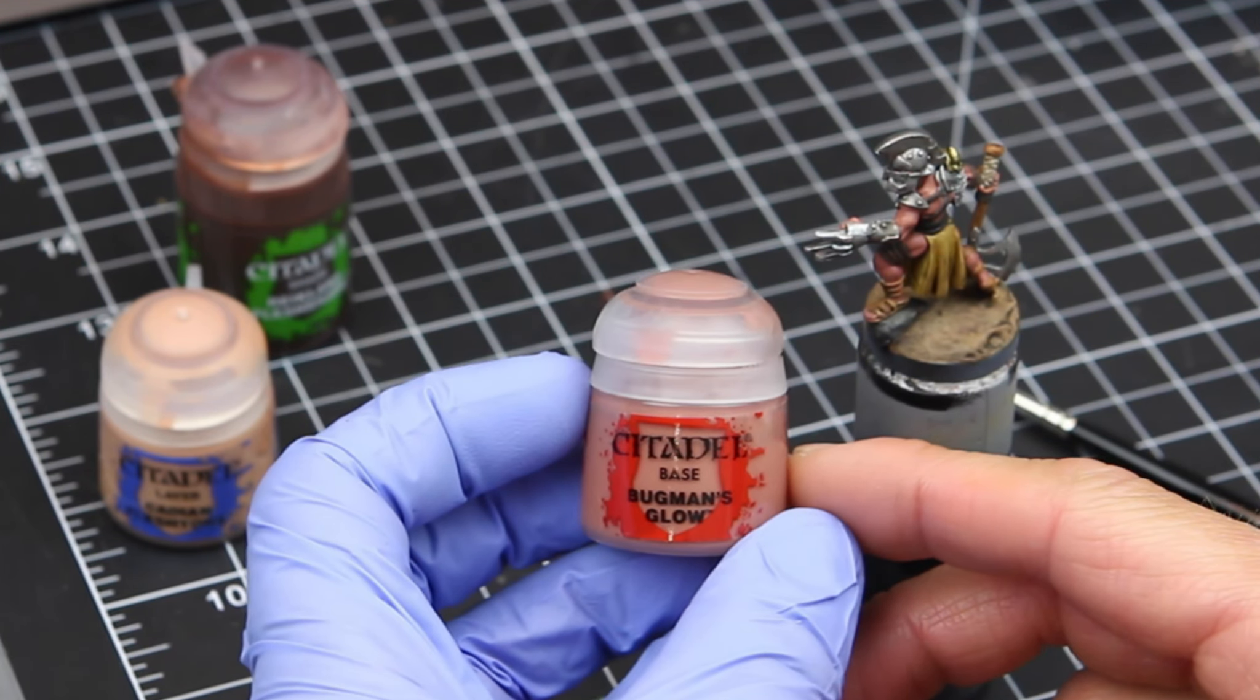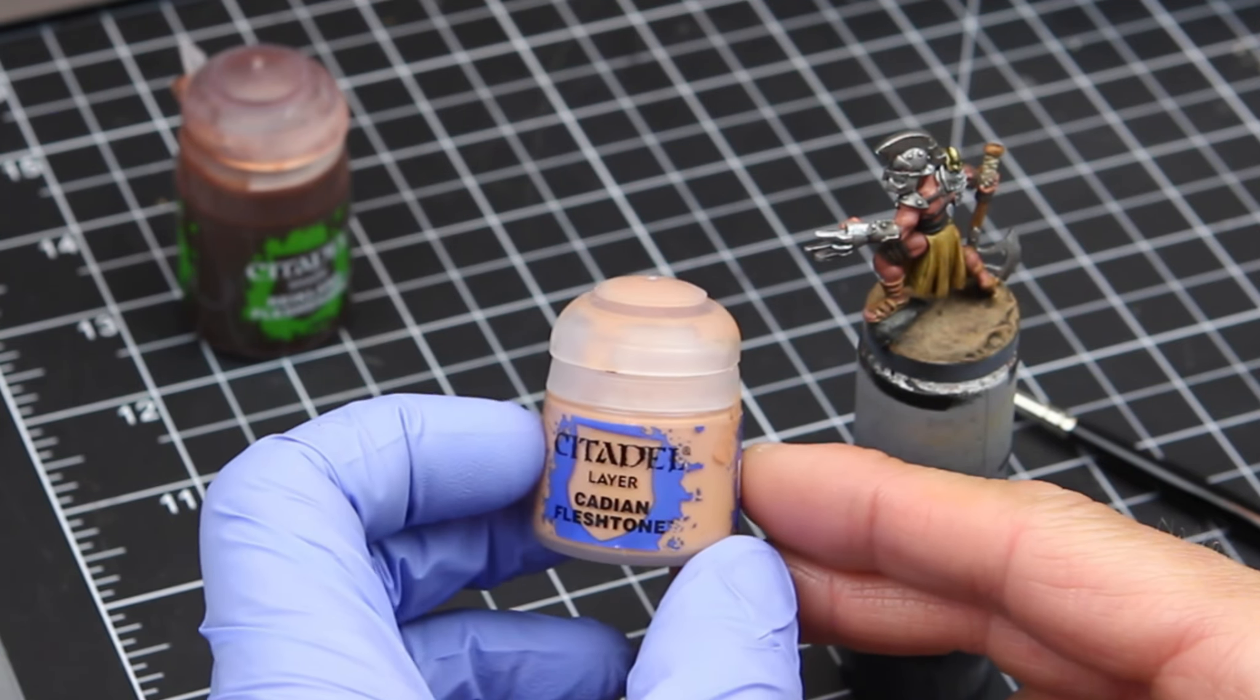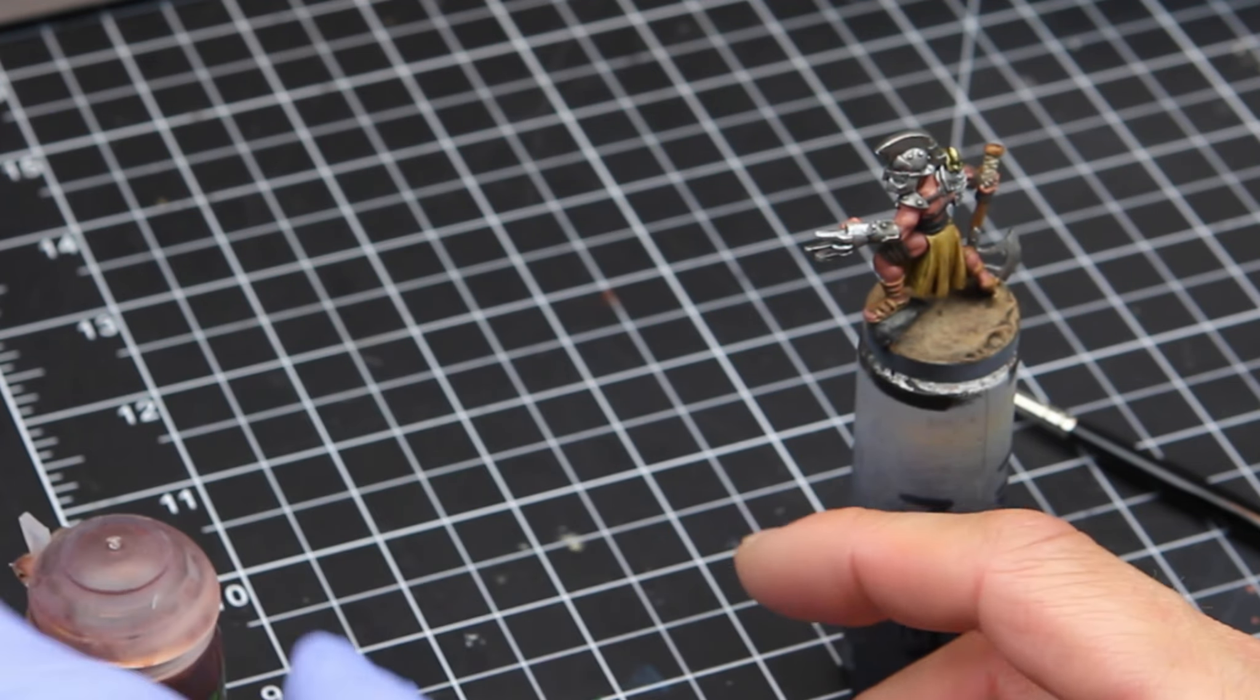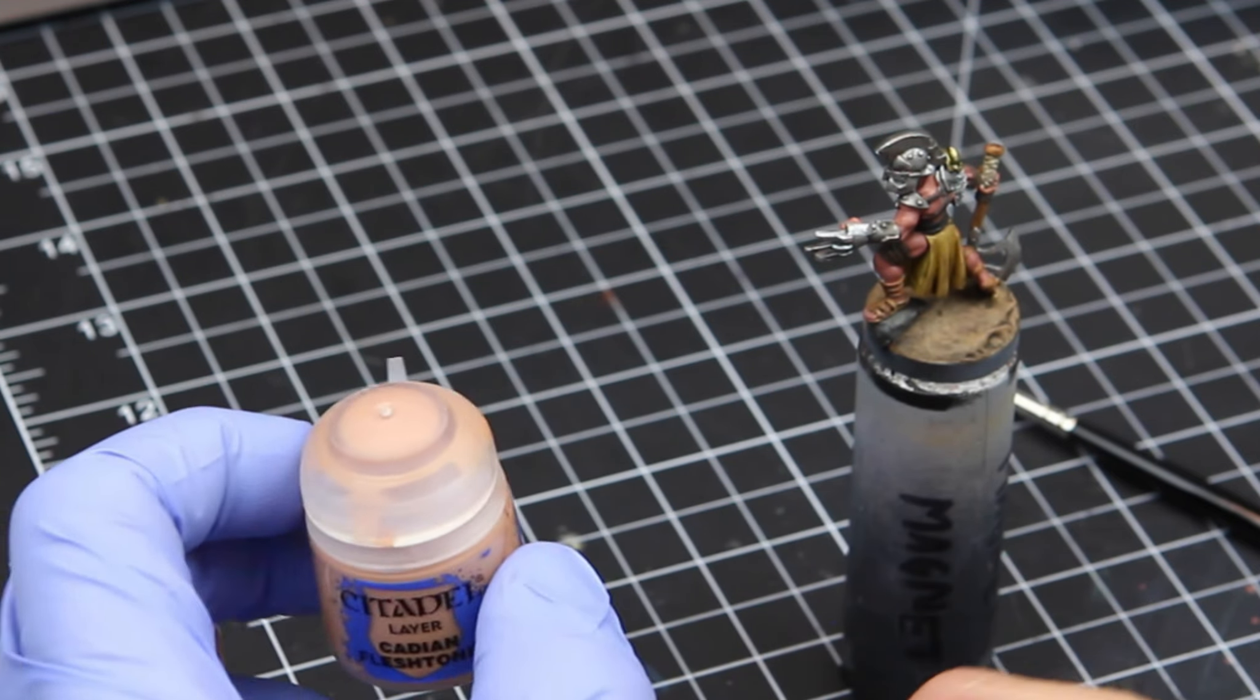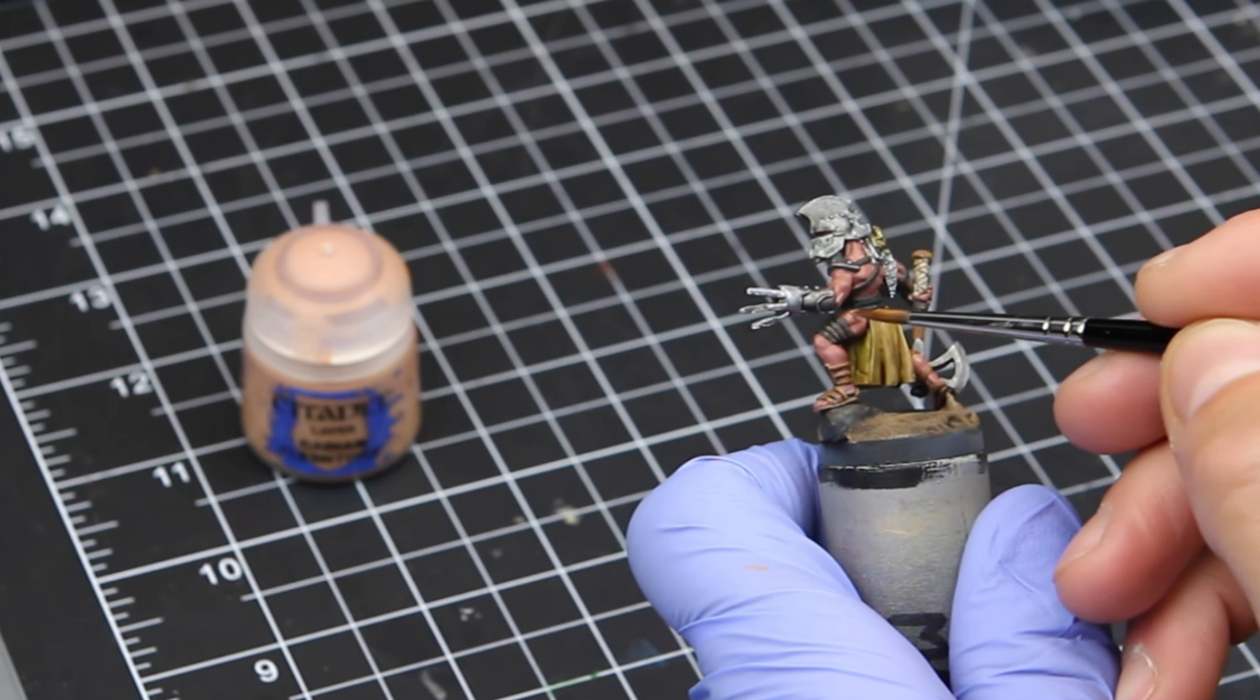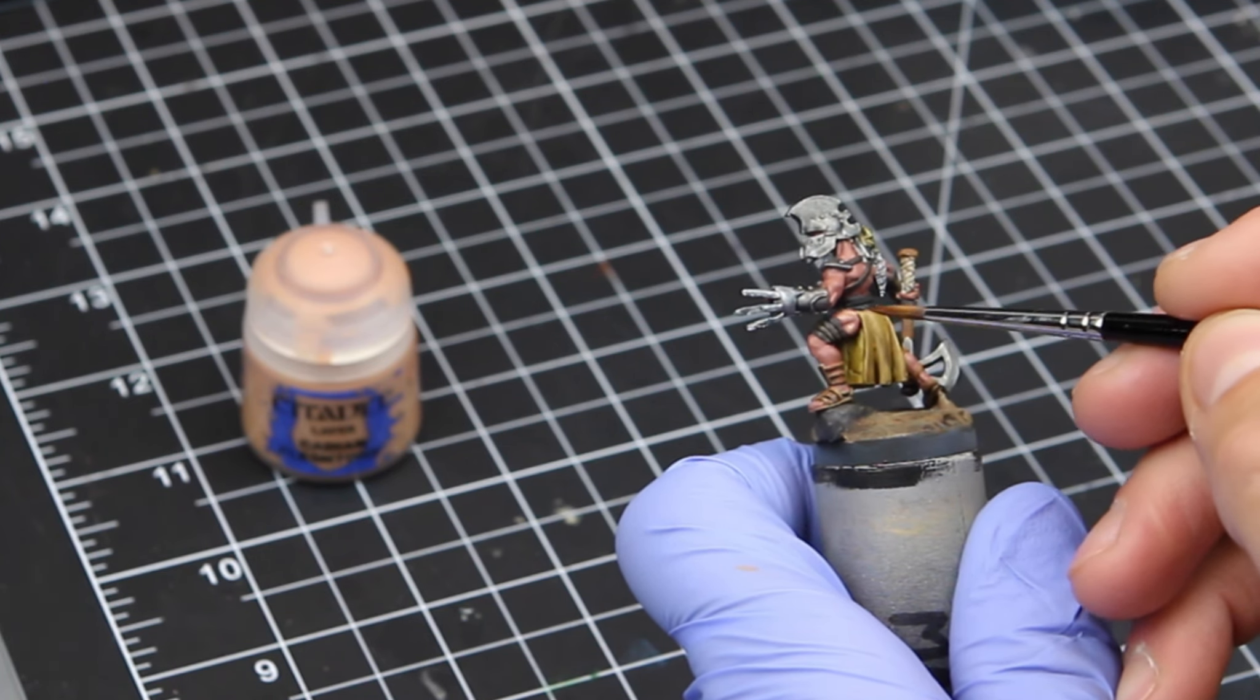These are Games Workshop paints. So we'll base coat him in that. Then we're going to do a Cadian Fleshtone over that to sort of highlight. Then we're going to wash him in the Reikland Flesh Shade, and then a very watered-down glaze, again, of the Cadian Fleshtone over that. And you can vary the skin tone color simply by adding some darker brown color in there, or some lighter colors to lighten up the skin tone.